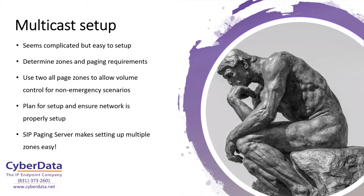One shameless plug: setting up different zones and designing your paging system is a whole lot easier when using our SIP paging server. It has a really easy setup process, with a bunch of different groups automatically preset — you just name those groups and copy the address and port from the paging server into the receiving devices. It makes setup really easy, and I'd strongly recommend getting a SIP paging server if you're dealing with multiple zones. It's a couple hundred dollars, really worth it to save the extra man-hours of figuring out how to mix different brands of phones, speakers, and strobes together.